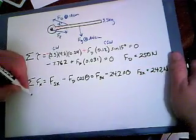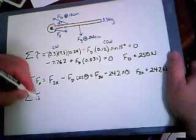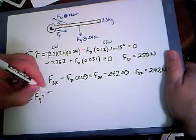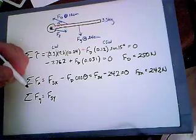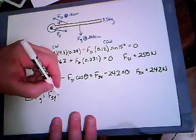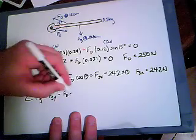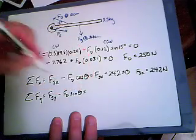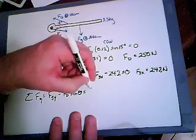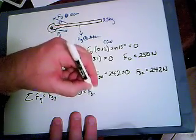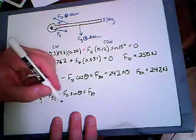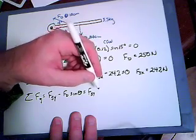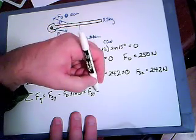And the third condition for equilibrium is the sum of all the forces in the y-direction. That also has to equal zero. So the force of the socket in the y-direction, again, because I don't know the angle, minus the force of the deltoid, which is the sine of the angle it makes, that has to be equal to zero. And so if I do 250 newtons times the sine of 15 degrees, then I get 65 newtons.